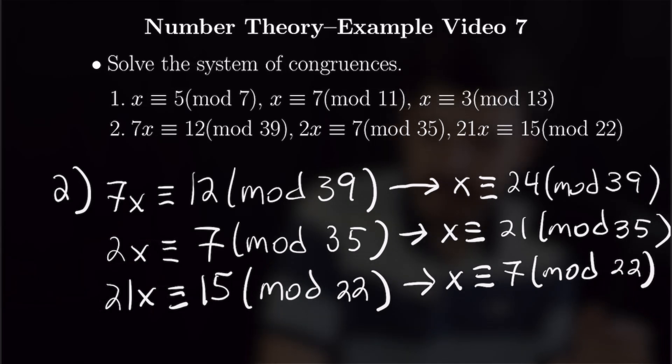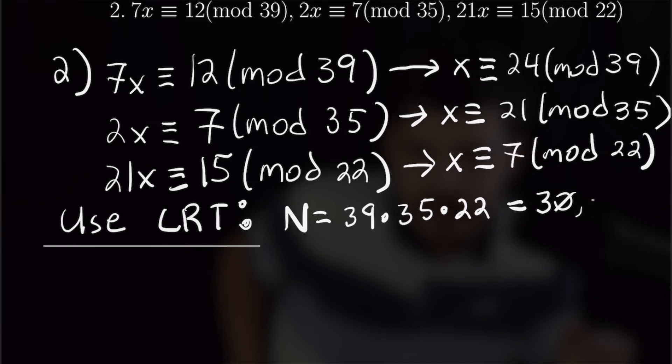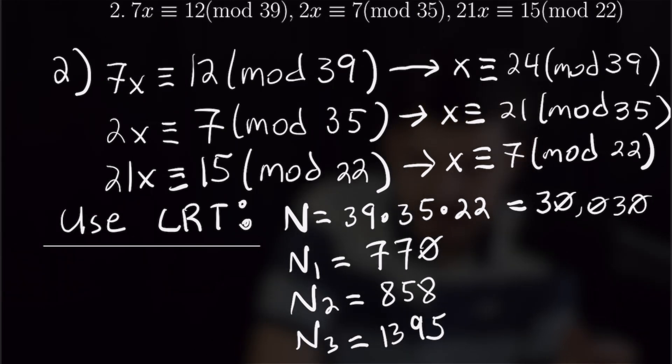From here, the solution process is going to be exactly the same as we had in the first problem. We're going to calculate all of our big N, we're gonna have big N is equal to 30,030. And big n one is 770, big n two is 858, and big n three is 1395.